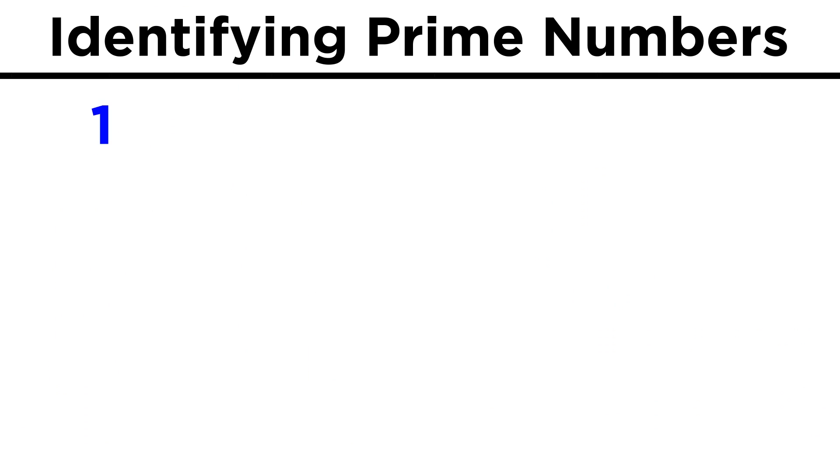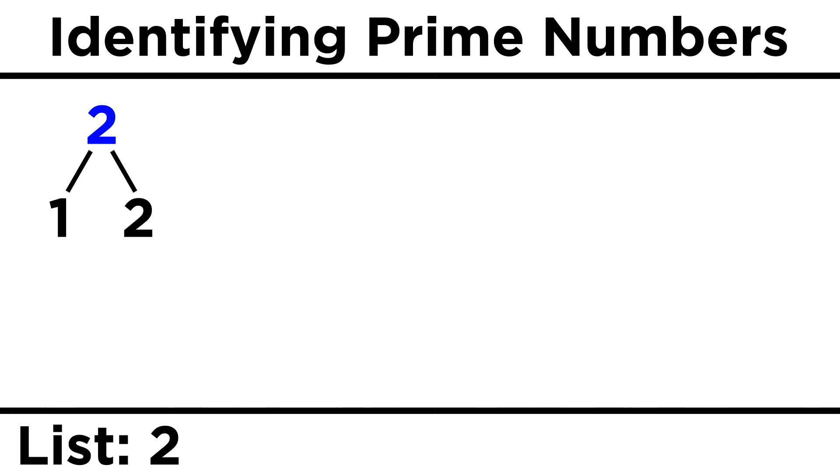What are the prime numbers? One doesn't count, because one and itself would be the same thing. So let's start with two. Two counts, as does three, because these are so small that there can be no other factors.